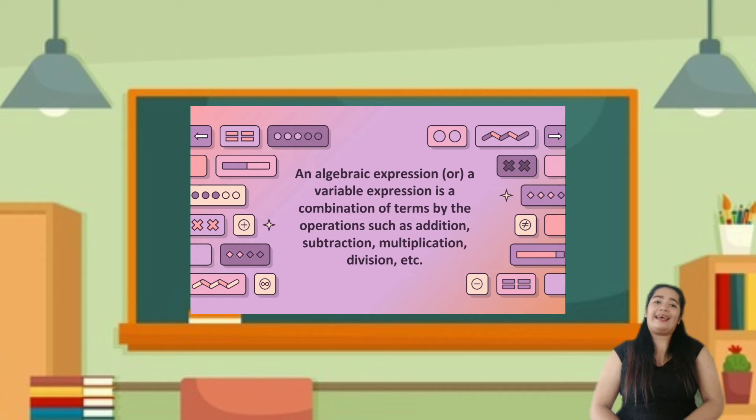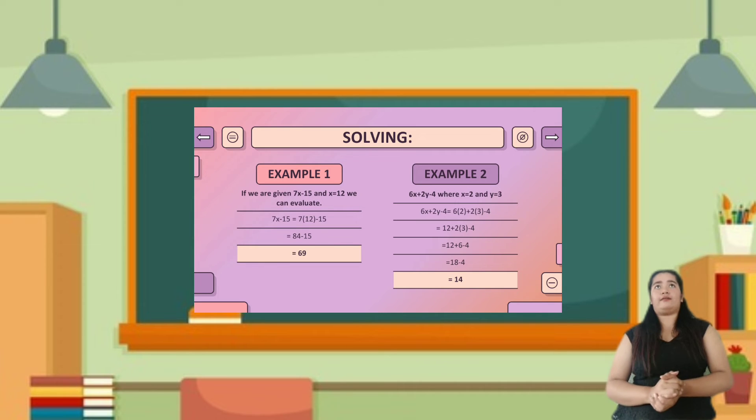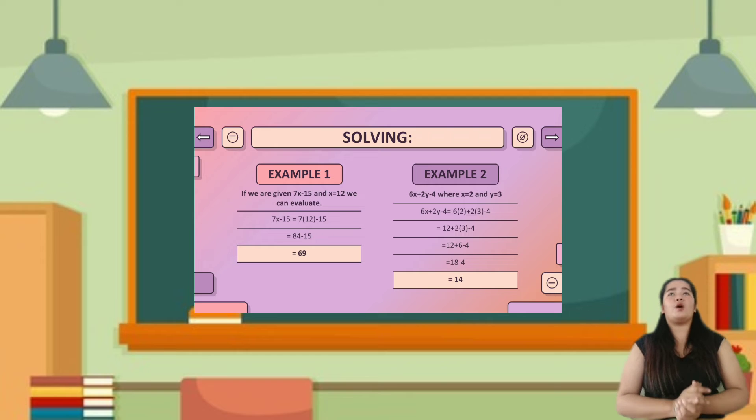Now, I will discuss to you how to evaluate algebraic expressions. Do you have any idea how to evaluate algebraic expressions? Anybody else? Yes, Gary. Very well said, Gary. So, now, I have two examples here. Example number one. If we are given 7x minus 15 and x is equal to 12, we can evaluate. Now, 7x minus 15 substitute x into 12. Now, 7 times 12 minus 15. Multiply first the 7 and 12. Now, 7 times 12 is equal to 84. Minus 15 is equal to 69.